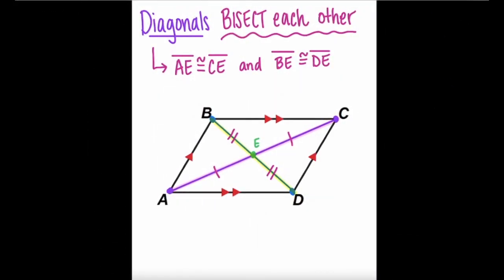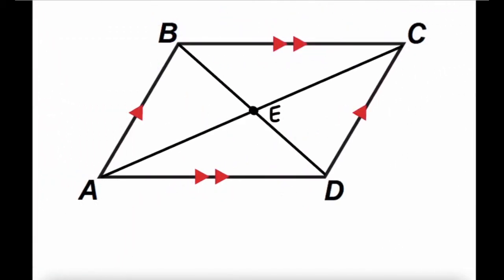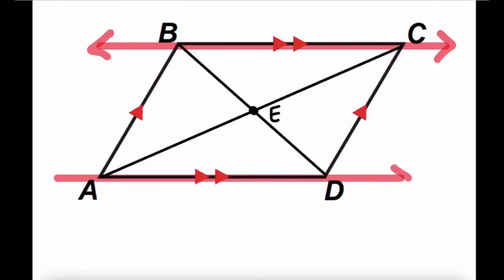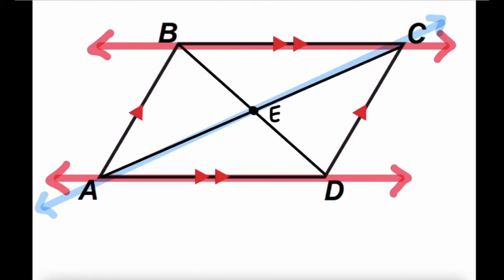But why is it that the diagonals of every parallelogram bisect each other? It has to do with creating congruent triangles. Taking a closer look at our diagram, we focus on side BC and extend sides BC and AD — two parallel lines being cut by transversal AC. When that happens, we get alternate interior angles that are congruent. That means the measure of angle BCE is congruent to the measure of angle DAE, because alternate interior angles are congruent.